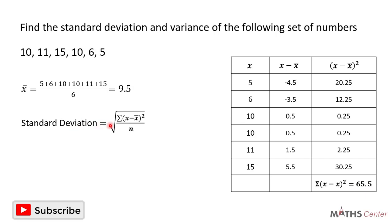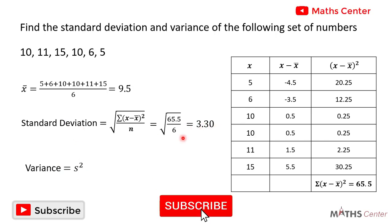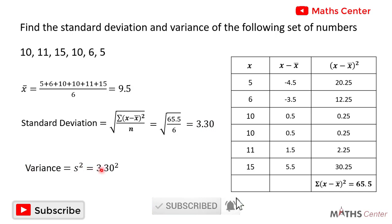We can now find the standard deviation: the square root of 65.5 divided by 6 gives us 3.30. The variance is equal to the standard deviation squared — 3.30 squared gives us 10.89. So the standard deviation is 3.30 and the variance is 10.89.